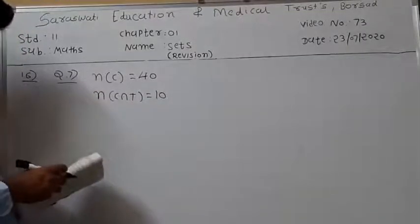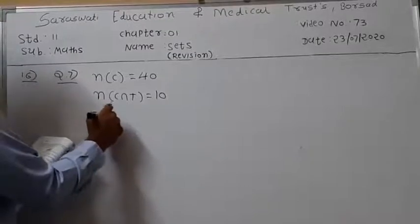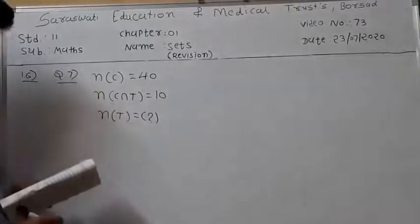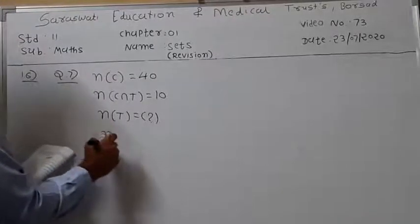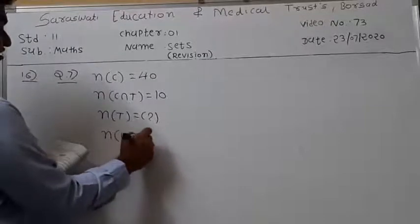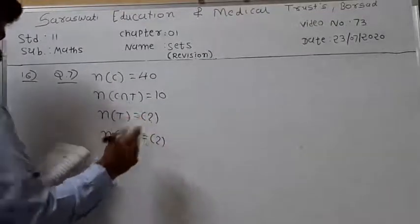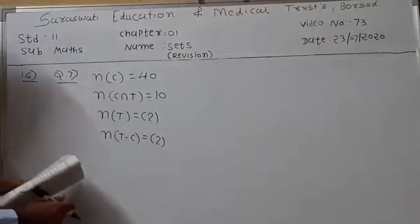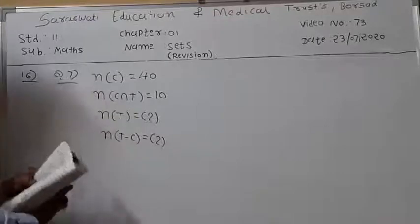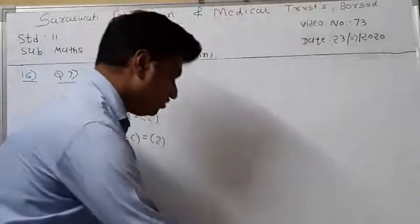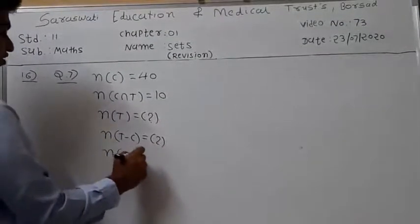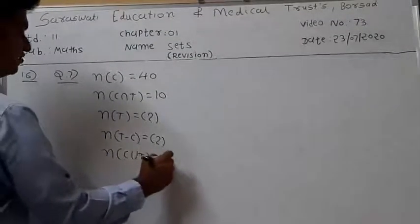The questions are: how many people like tennis, and how many people like tennis but not cricket — that is, N of T minus C. Total number of people is 65, so N of C union T is equal to 65.